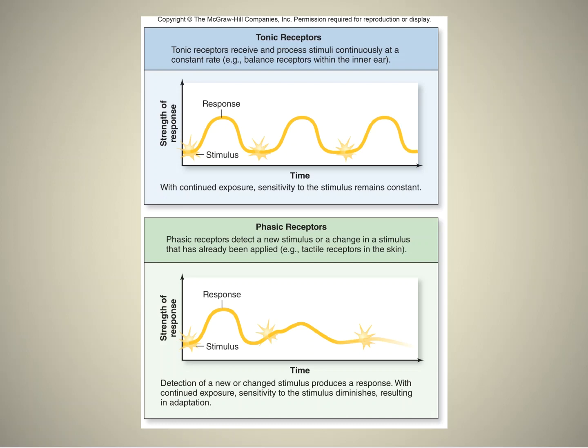A great example of phasic adaptation is olfaction — smell receptors are very phasic. So if you walk into a room with a real stench, a really bad smell, and that bad smell doesn't get worse, then after just a few minutes you won't smell it anymore — you won't even detect it. Unfortunately, that's true for good odors as well.